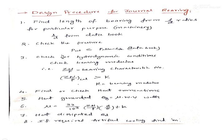After finding the length, we check the pressure against allowable values, and also compare the bearing characteristic number ZN/P with the bearing modulus. We also calculate heat generated and heat dissipated — these should be balanced; otherwise, artificial cooling is required. The basic steps are: find length, check pressure, check against bearing modulus, find heat, and if heat is excessive, find the mass of oil needed for artificial cooling.